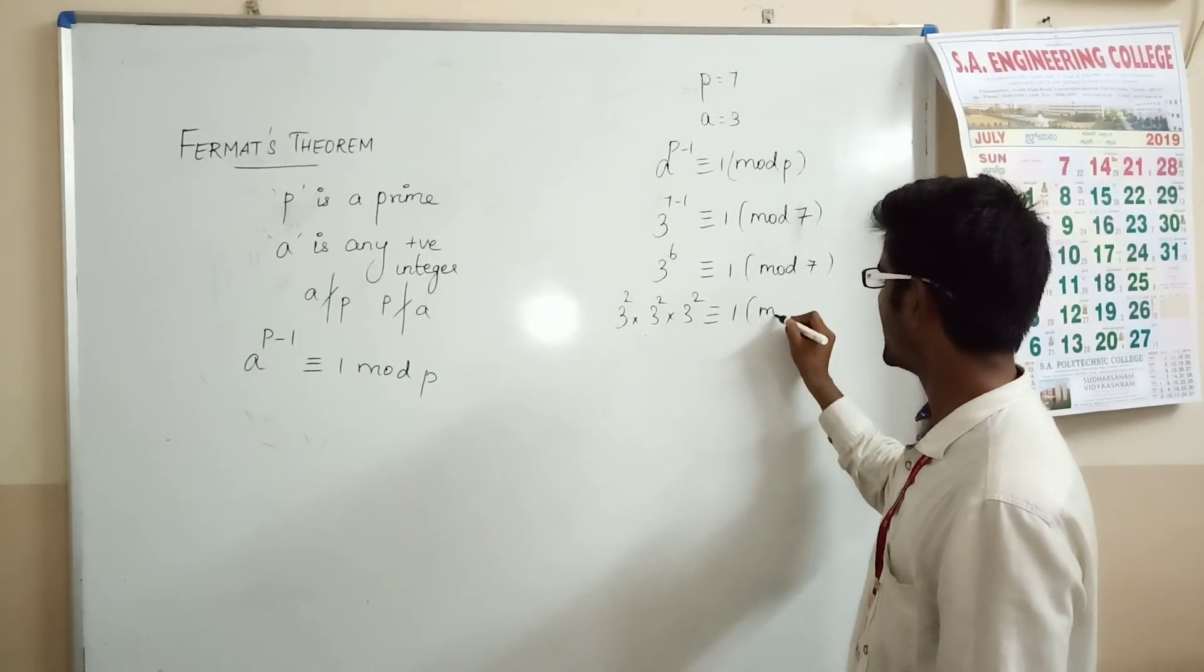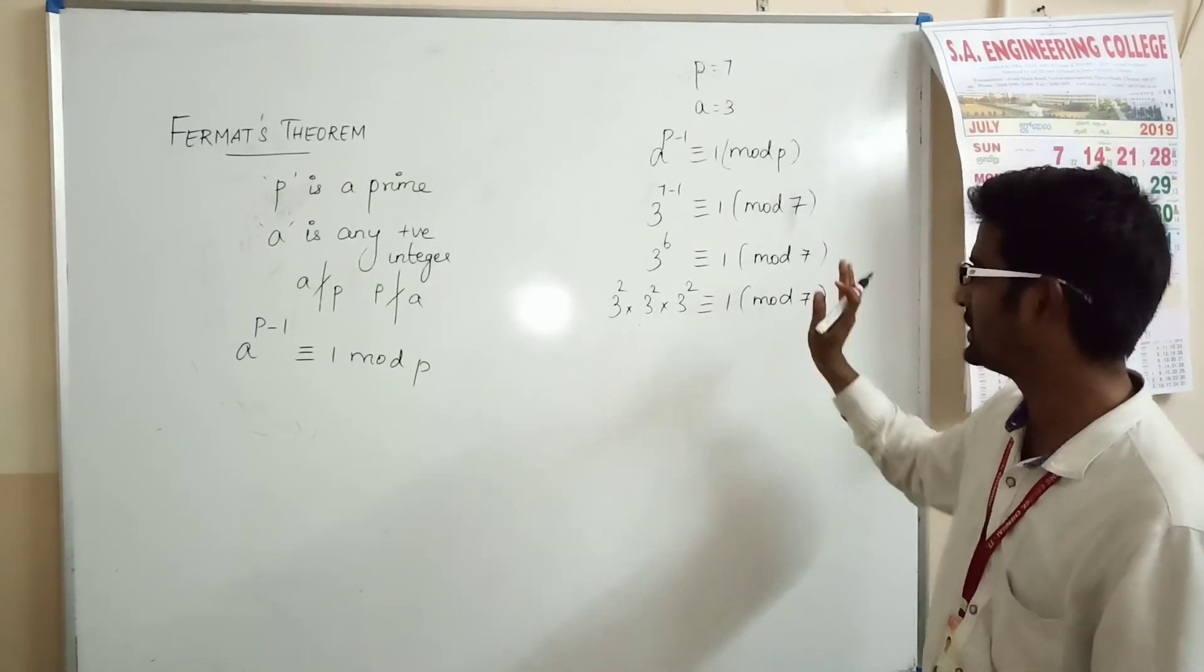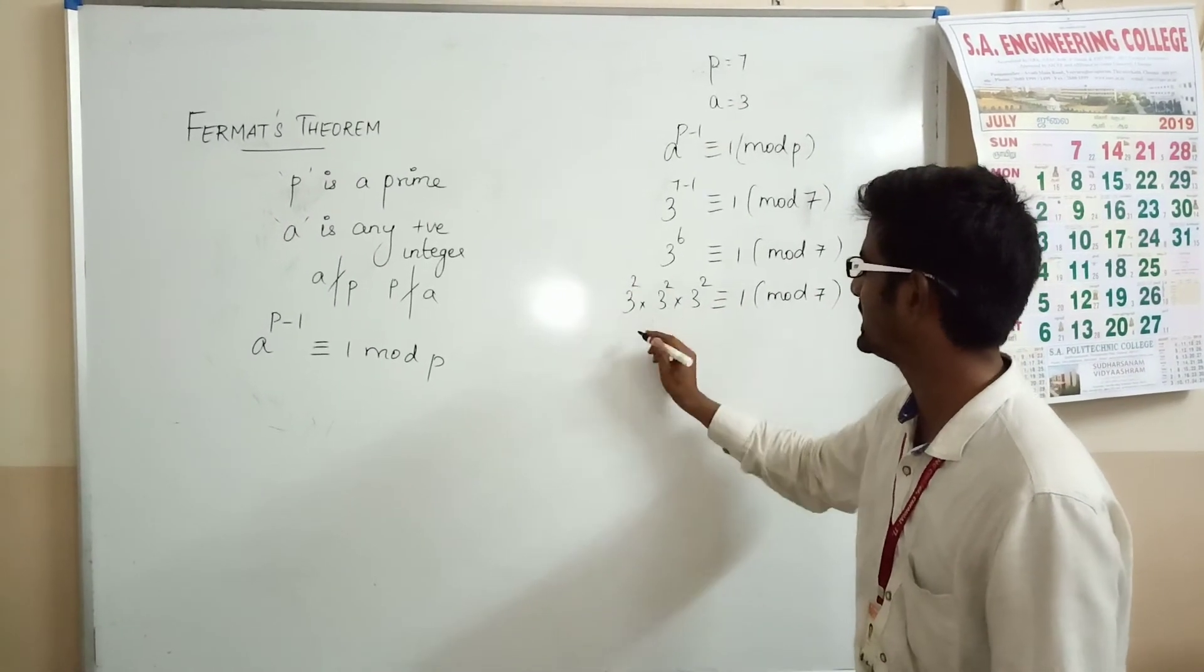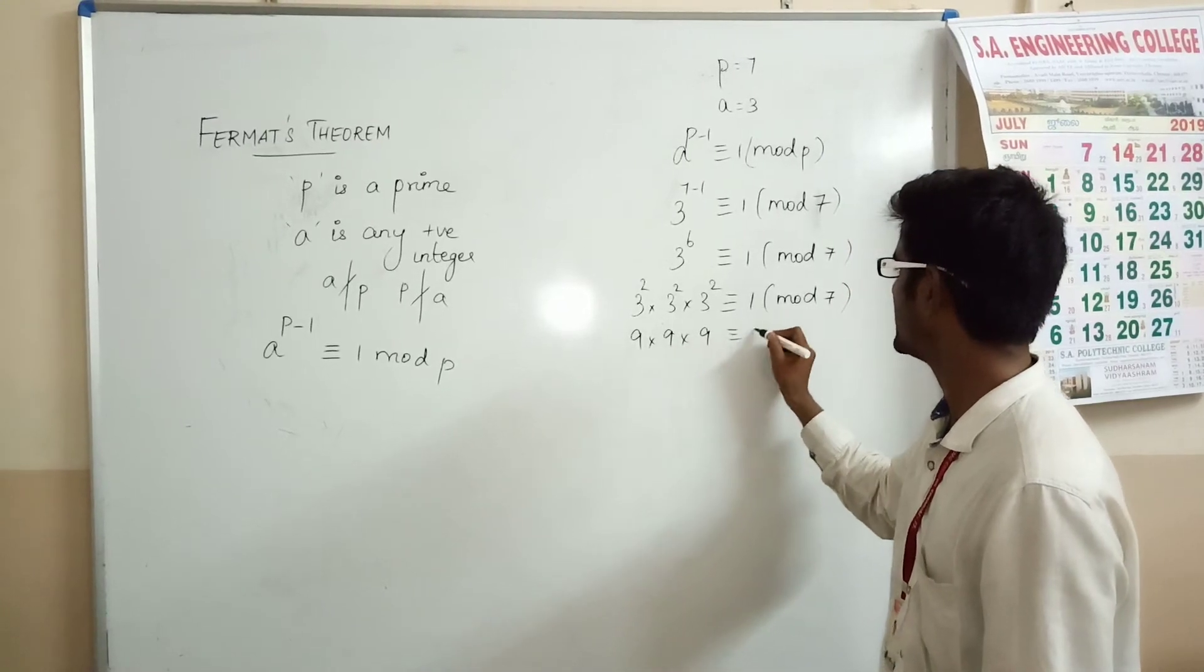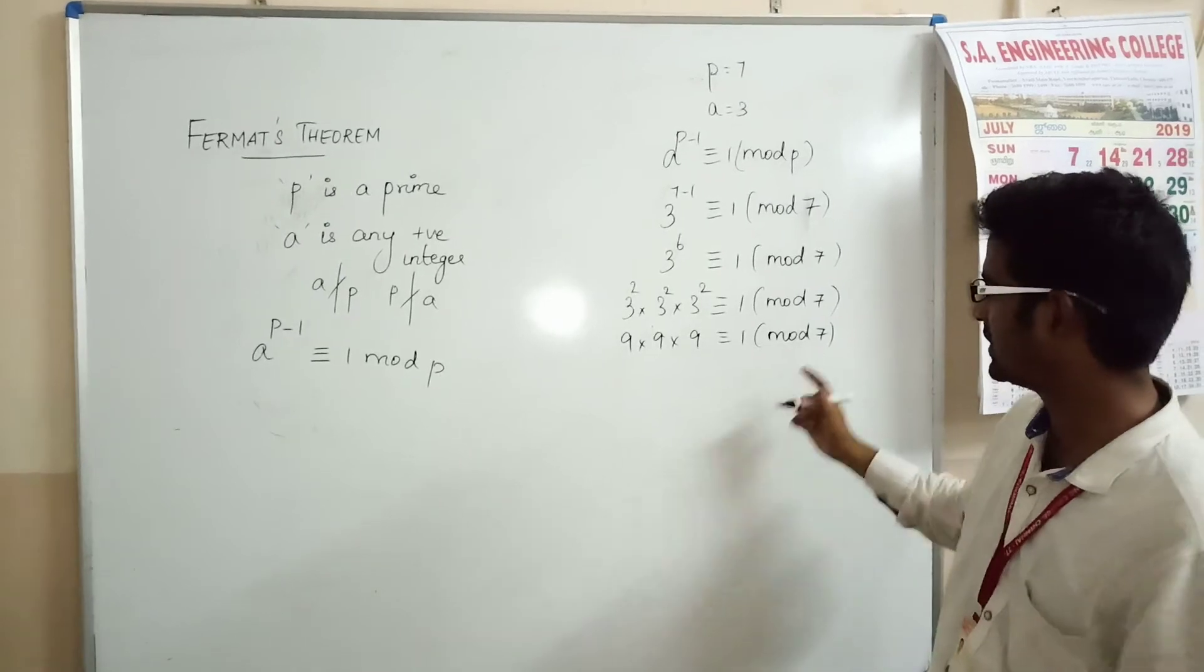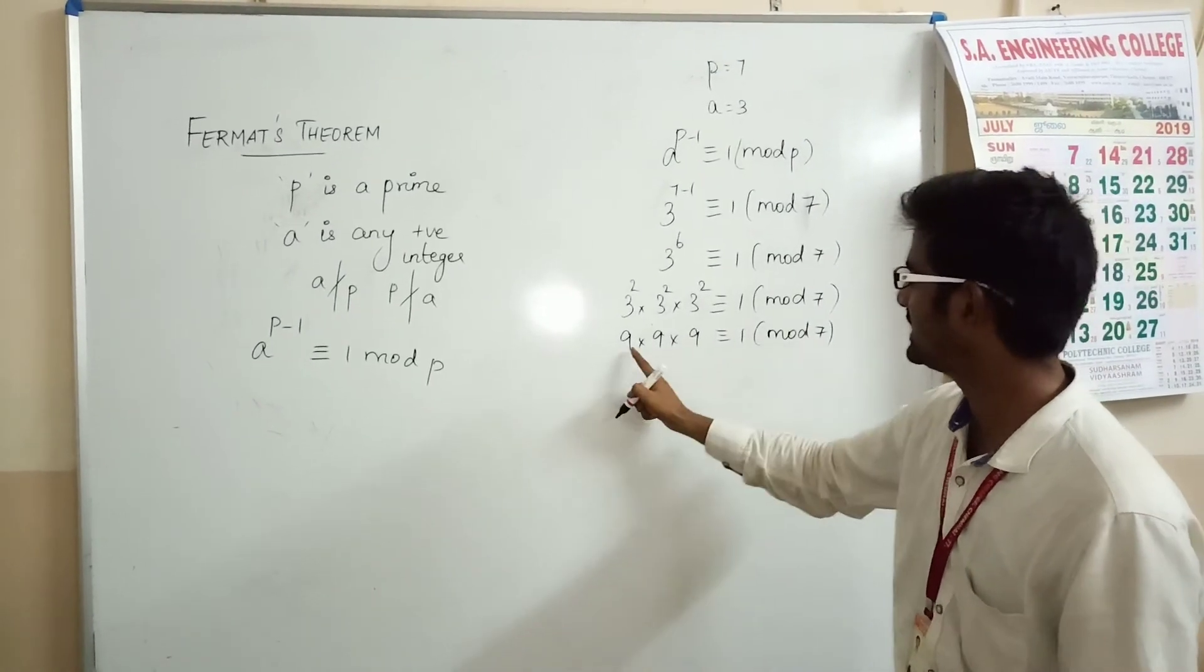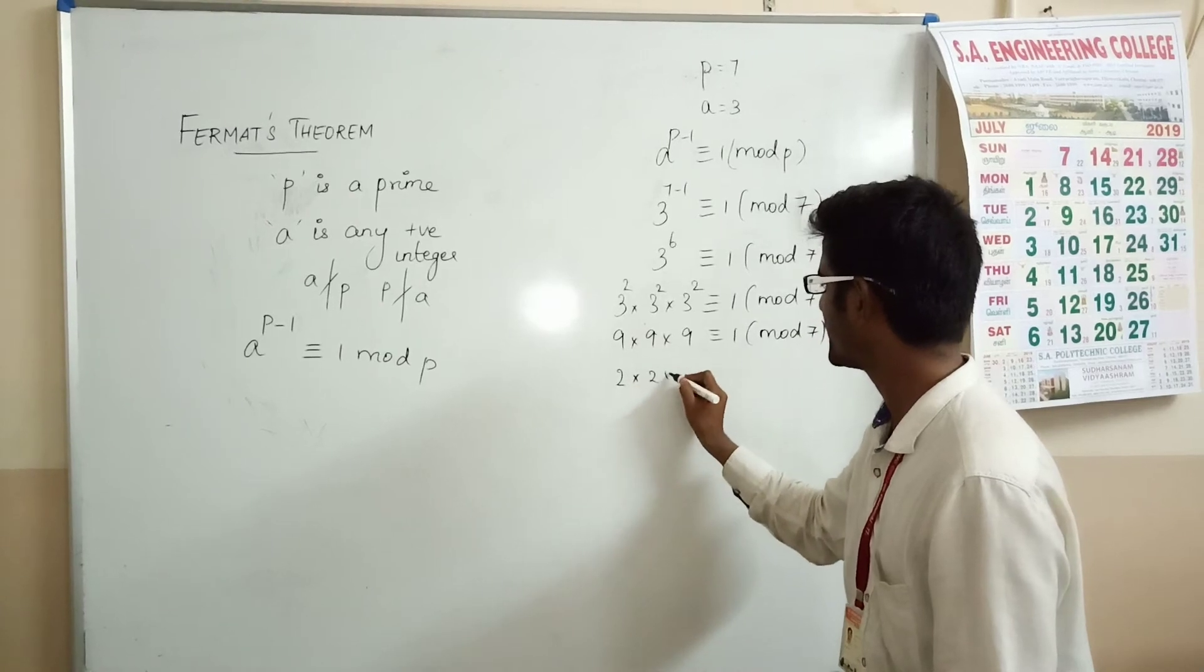Mathematically, any approach will give you the same result. So (3^2)^3 is congruent to 1 mod 7. 3^2 = 9, so 9 × 9 × 9 is congruent to 1 mod 7. As per modular arithmetic rules, you can simplify this. 9 mod 7 can be written as 2, so this becomes 2 × 2 × 2.